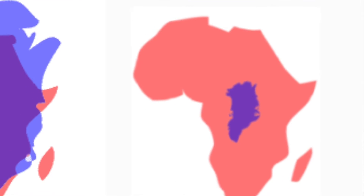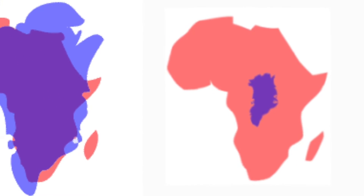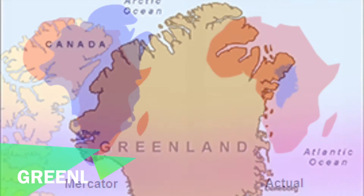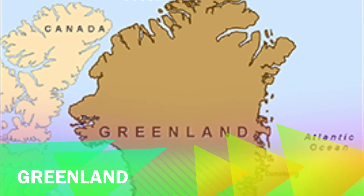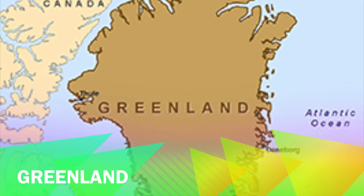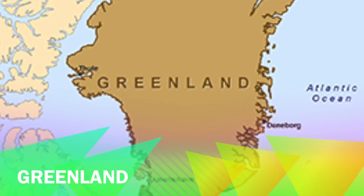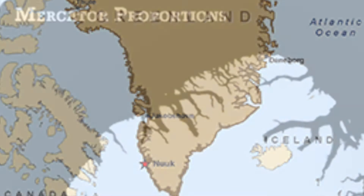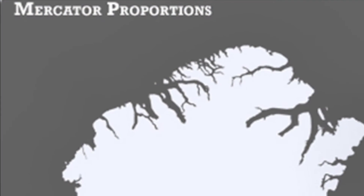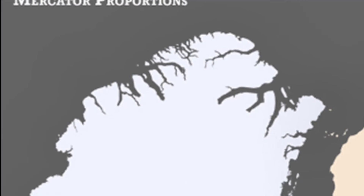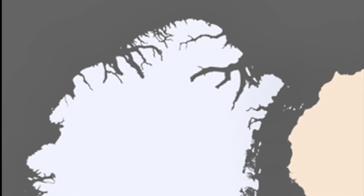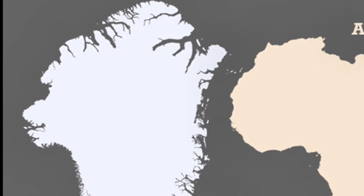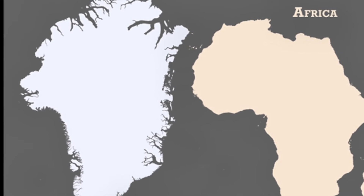There is also a Greenland issue. Greenland's ratio is way off on the Mercator map — it looks as big as Africa, but in truth it is only one-fourth of Africa's size.